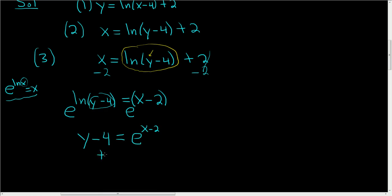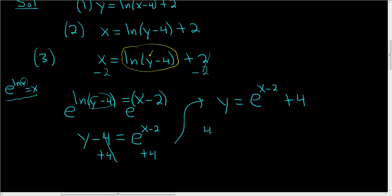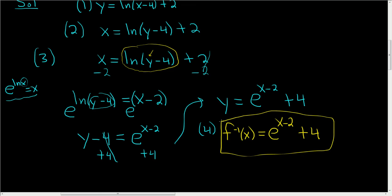To finish, we'll add 4 to both sides. So we end up with y equals e to the x minus 2, plus 4. The fourth step is to write down the final answer using the proper notation. So f inverse of x is equal to e to the x minus 2 plus 4. And that is the final answer.